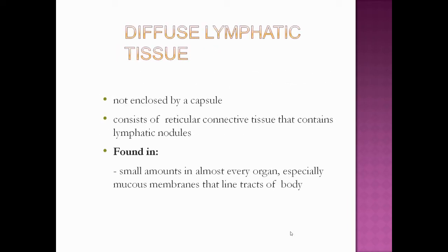Now we will see diffuse lymphatic tissue. It is not enclosed by a capsule, and it consists of reticular connective tissue containing lymphatic nodules. It is found in small amounts in almost every organ, especially in the mucous membrane that lines the tracts of the body. It is not a specific lymphatic tissue and is diffusely located throughout organs.